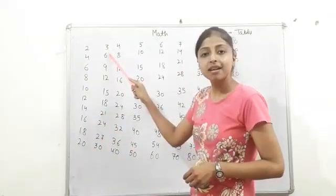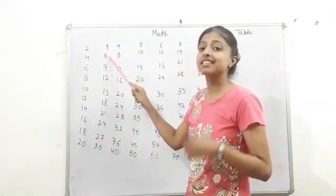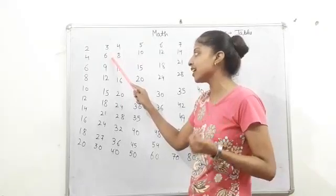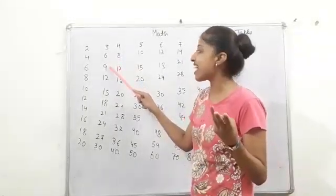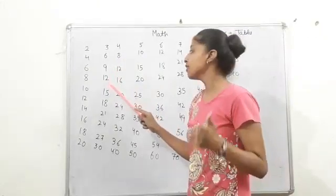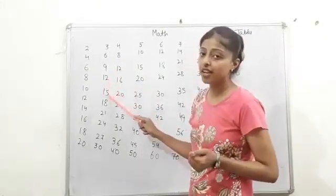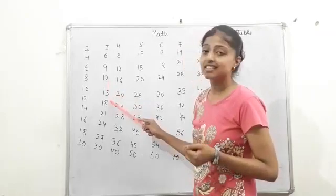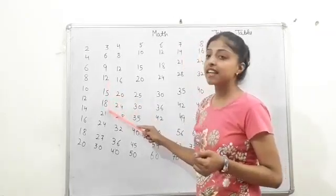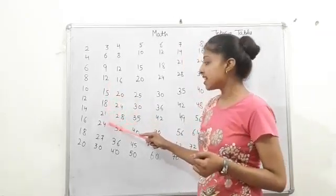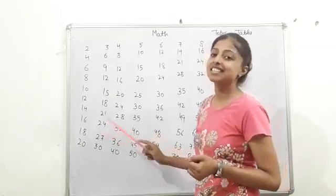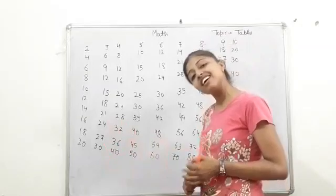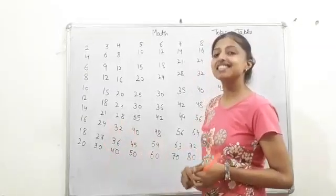Next, the table is of 3. 3 ones are 3, 3 twos are 6, 3 threes are 9, 3 fours are 12, 3 fives are 15, 3 sixes are 18, 3 sevens are 21, 3 eights are 24, 3 nines are 27, 3 tens are 30. Easy enough?